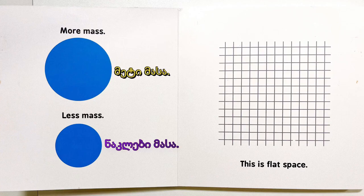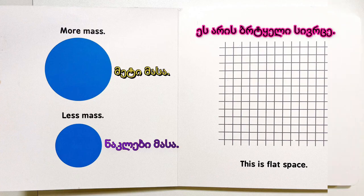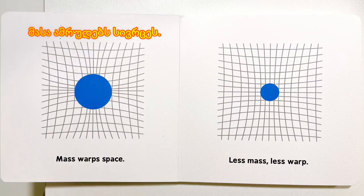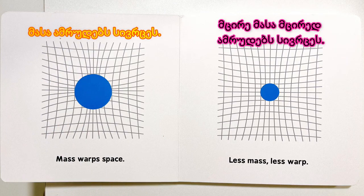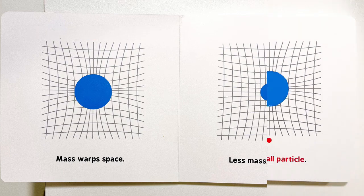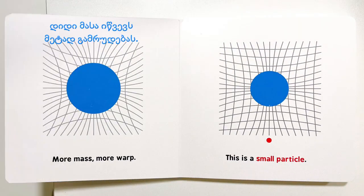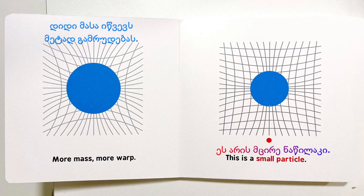This is flat space. Mass warps space. Less mass, less warp. More mass, more warp. This is a small particle.